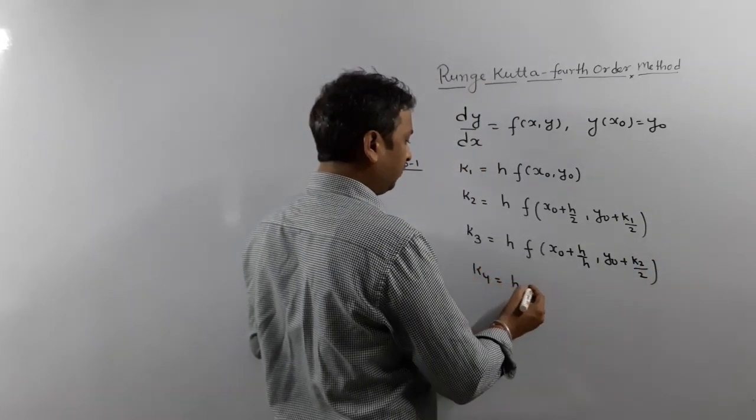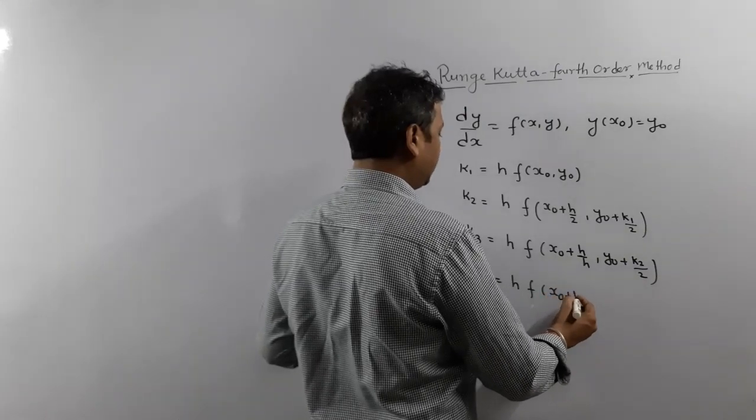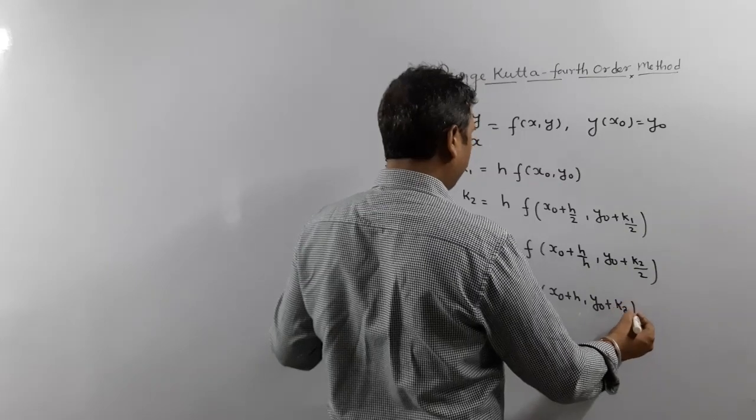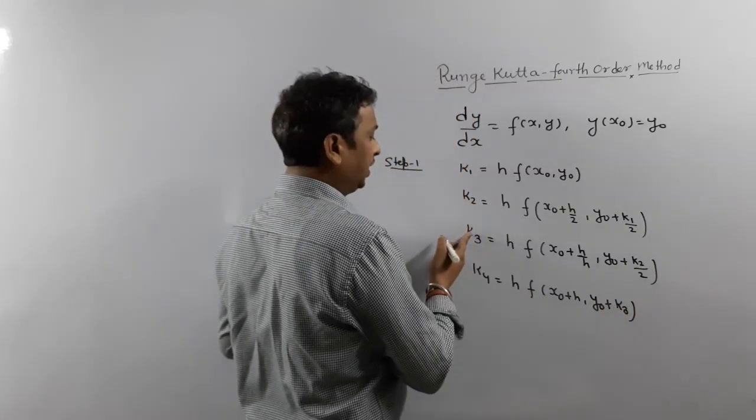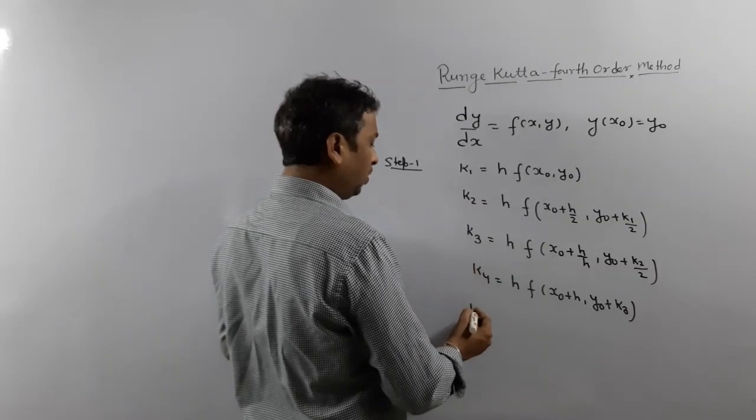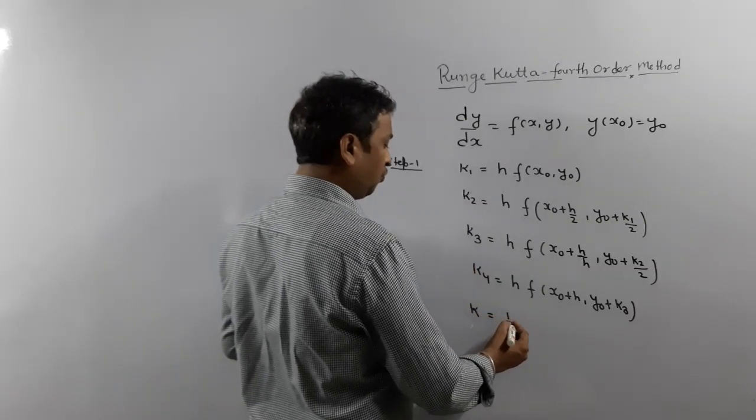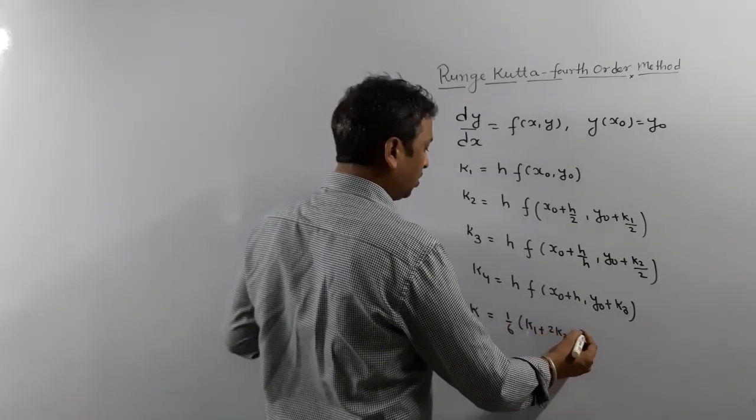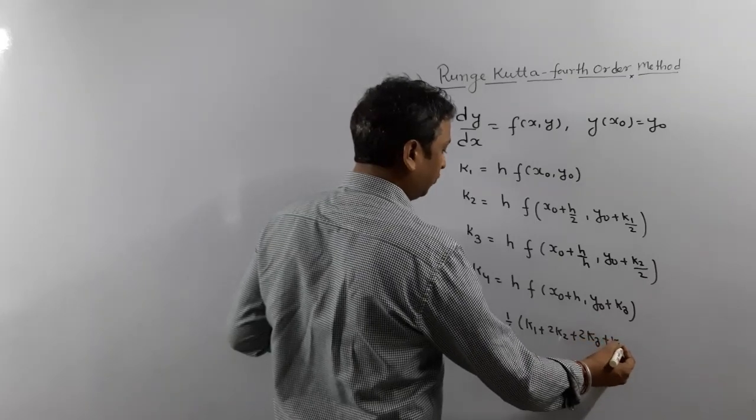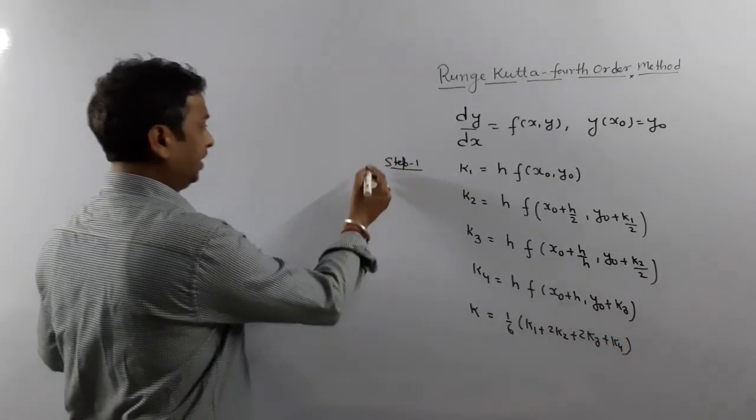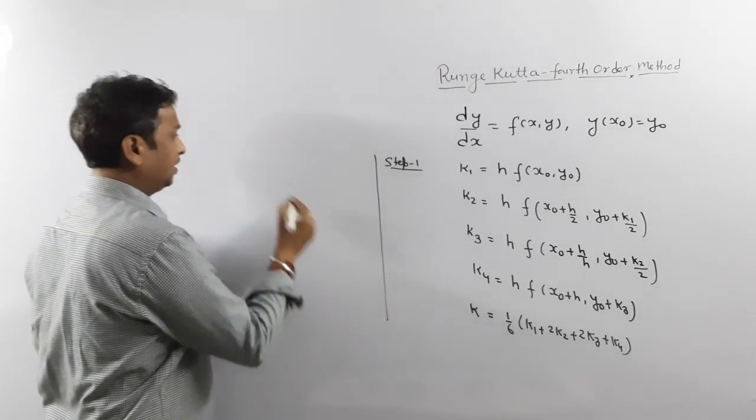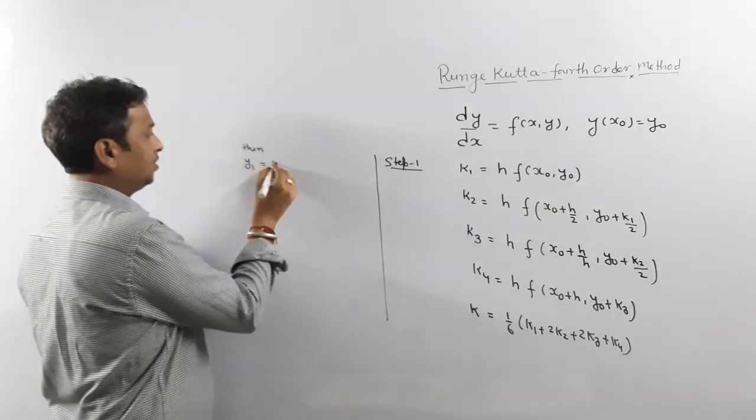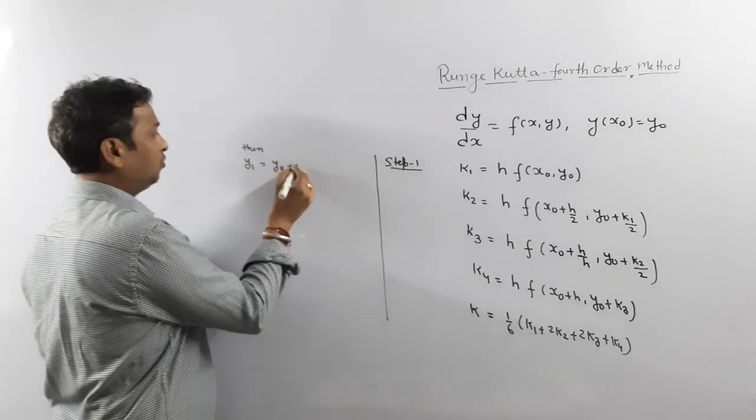Then K4. What is K4? H function value at x0 plus h and y0 plus k4. Once you have calculated K1, K2, K3, K4, K is 1/6(K1 + 2K2 + 2K3 + K4). Once you have calculated K, then y1 = y0 + K. This is your answer.